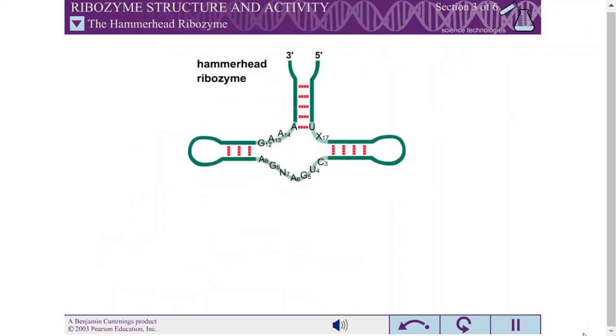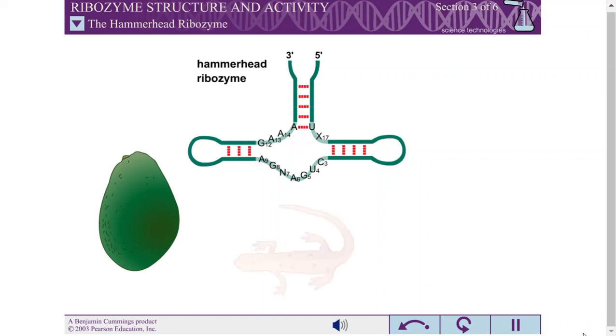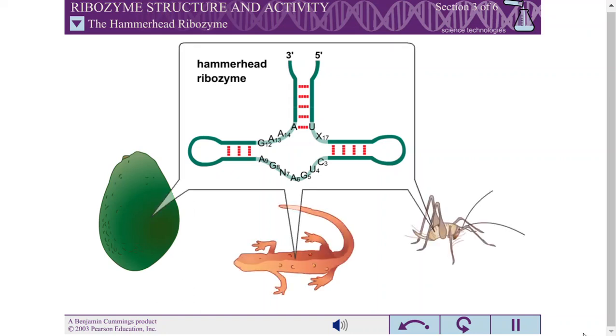The hammerhead ribozyme is a sequence-specific ribonuclease, whose biological activity uses a mechanism similar to alkaline hydrolysis. The hammerhead ribozyme was originally discovered in certain infectious RNA agents of plants, called viroids, and has since been discovered in the genomes of species ranging from newts to cave crickets.